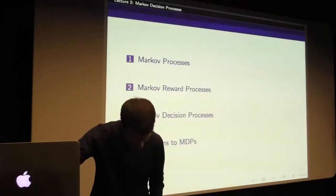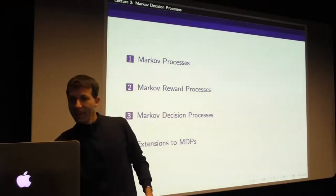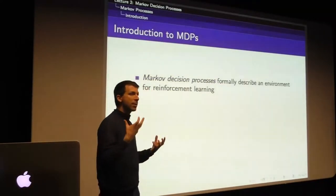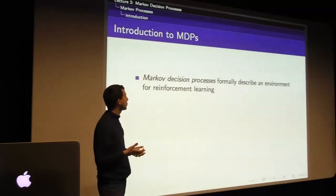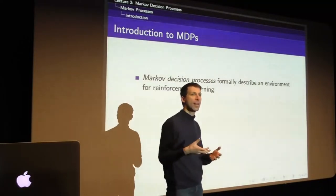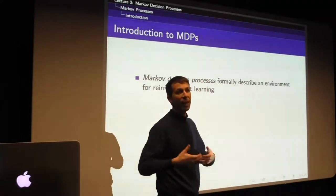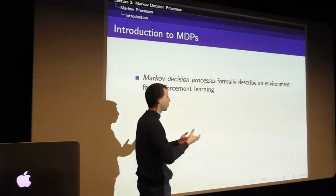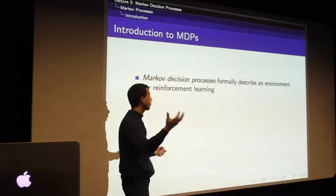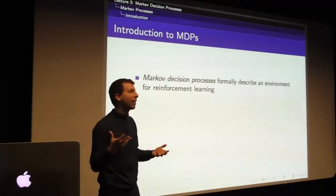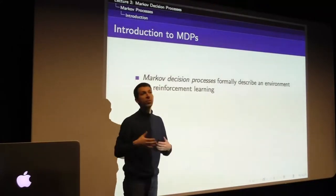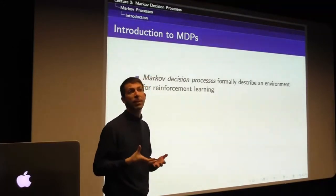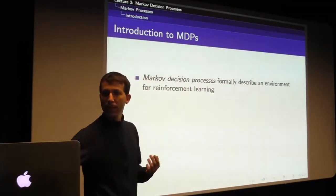We're going to develop this formalism - the Markov decision process. As discussed in the last class, we have an agent (our algorithm, the brain we're trying to build) interacting with some world - the real world for a robot, the trading environment for a trading agent, the factory floor for a factory. We want a description of that environment so we can apply tools and understand reinforcement learning. That description is the MDP.